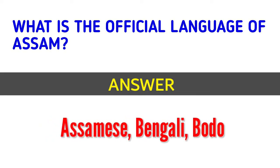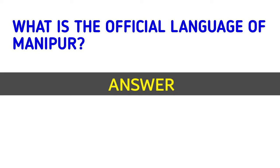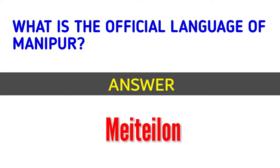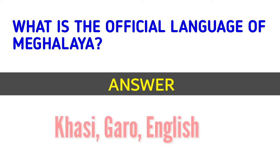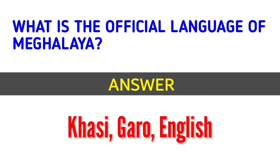What is the official language of Manipur? Answer: Meitei (Manipuri). What is the official language of Meghalaya? Answer: Khasi, Garo and English.